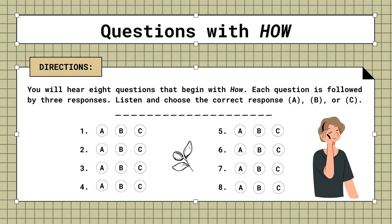5. How can I contact you while you're away? A. Send me an email. B. Yes, I'll be gone for a week. C. The contract is already signed.